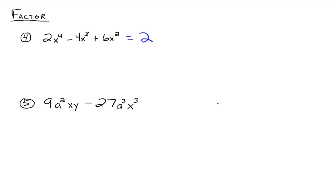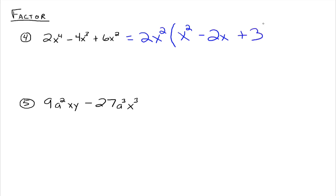We can factor out the variable with the smallest exponent. We have x to the 4th, x cubed, and x squared, so we take an x squared out. If you take 2x squared out of 2x to the 4th, that leaves x squared. Taking 2x squared out of negative 4x cubed leaves minus 2x. And taking 2x squared out of 6x squared leaves plus 3. You can check that by distributing the 2x squared through and you get the same thing you started with.